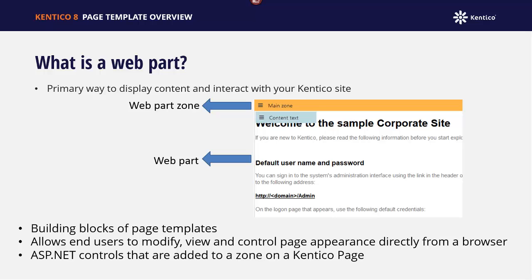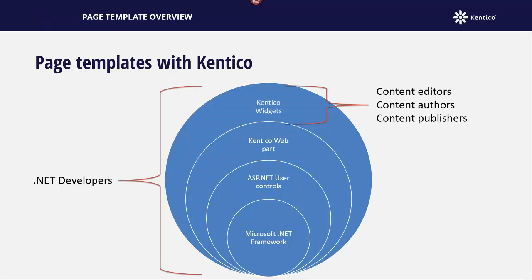Technically, Web Parts are ASP.NET controls that are added to a Kentico CMS Web Parts zone. Within Kentico, Web Parts are designed to cover a wide range of user experience and company needs. To deliver this, there are three basic implementations of Web Parts.